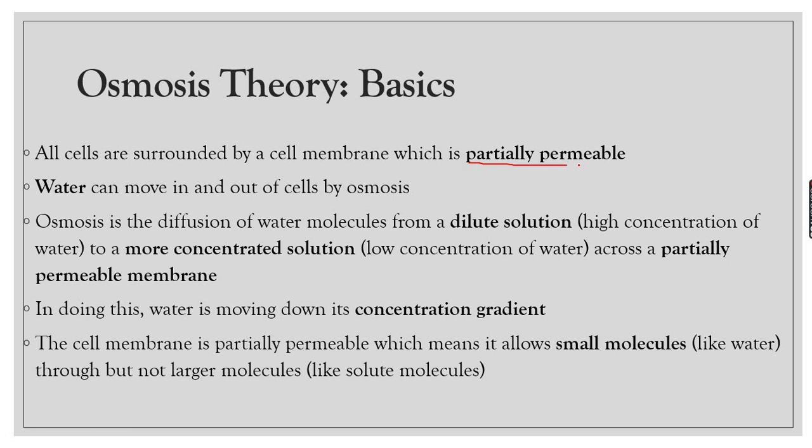Partially permeable means that substances can move in and out of the cell through this partially permeable membrane. It allows some substances to pass through but not all substances — larger substances may have their entry restricted.